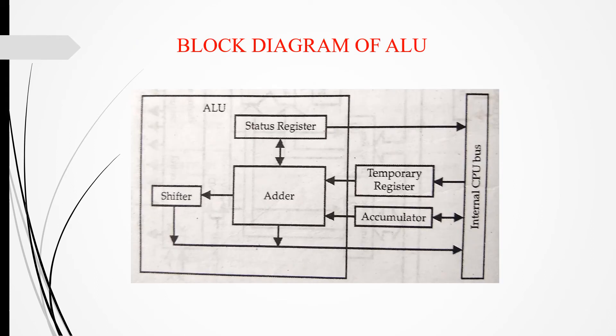This figure shows the block diagram of the arithmetic logic unit. The ALU is an 8-bit unit which performs arithmetic and logical operations. It contains an adder, a shifter, and a status register. The adder performs arithmetic operations like addition and subtraction. The shifter performs logical operations like rotate left, rotate right, etc. The result is stored in the accumulator. The status register contains a group of individual flip-flops that can be set or reset based on the condition created by the last ALU operation. The temporary register is used to store data temporarily during the operation.